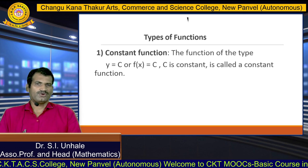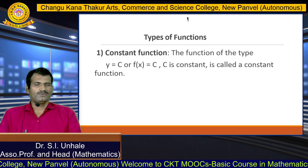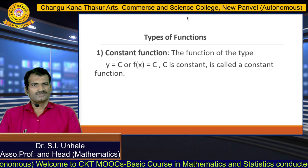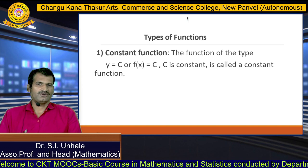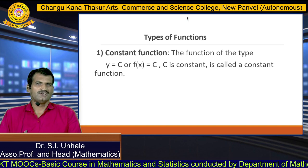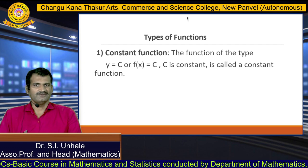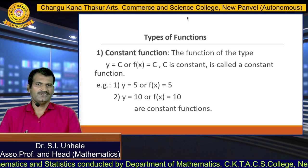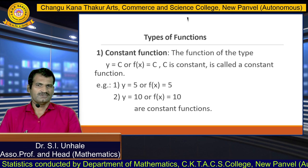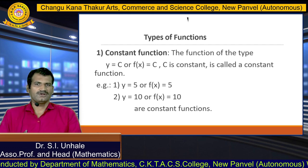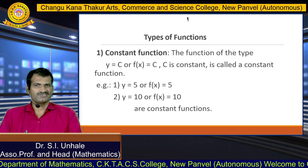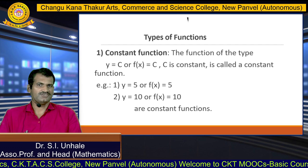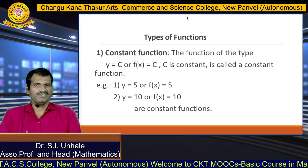The first type of function is the constant function. A constant is a fixed number which does not change its value. The function of the type y = c or f(x) = c, where c is a constant, is called a constant function. For example, y = 5 or f(x) = 5, where c is 5, or y = 10 or f(x) = 10 — these are constant functions. The output of this function is fixed and constant, which is why we call it a constant function.